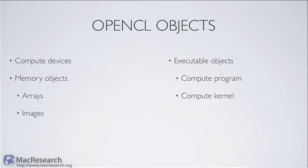Let's talk about OpenCL objects, which fall into three main categories. First, compute objects — our compute devices. Second, memory objects — data arrays or images, which are effectively data arrays but conceptually broken into arrays and images. Third, executable objects — our compute program, which is a global collection of things OpenCL will execute, effectively our compute kernels. A program consists of many compute kernels.